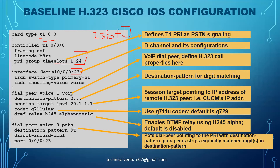Under the serial interface, you configure 'isdn switch-type primary-ni' and 'isdn incoming-voice'. The switch type is obtained from your service provider and must match on both sides. If the switch type is different on your side versus the ISP side, your PRI may not show as active - it may show as deactivated.